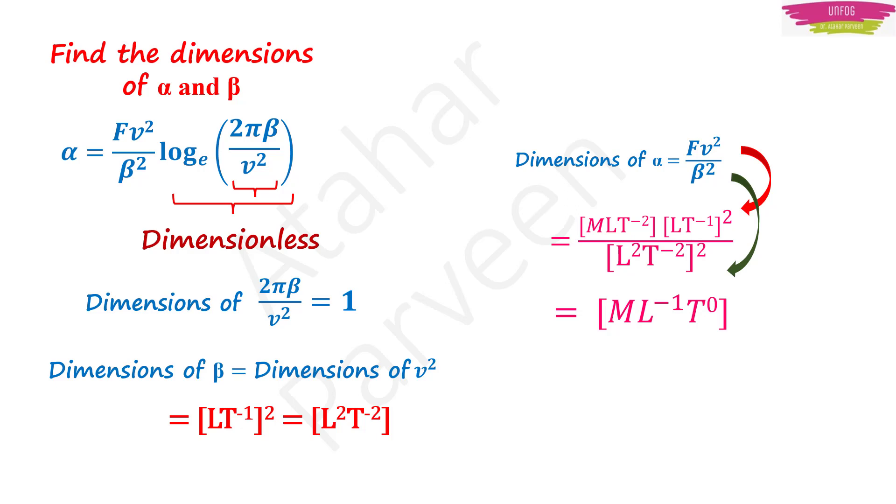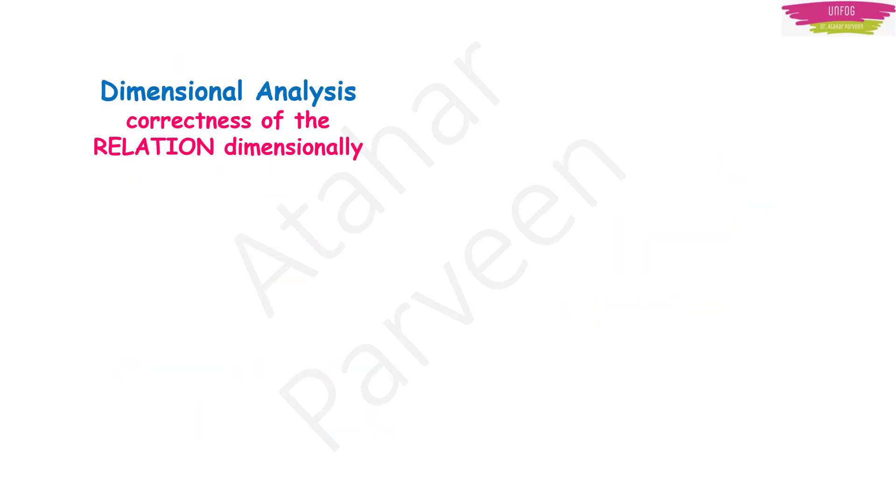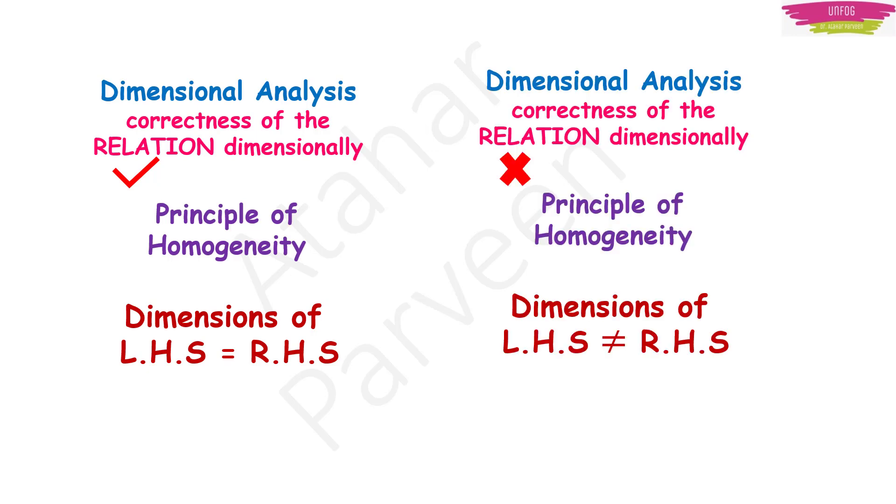In your exam, a simple equation may be asked. And also note that dimensional analysis always works to check the correctness of a relation dimensionally. Actually, it is based on the principle of homogeneity. That is, in a relation, the dimension on left hand side should be equal to the dimension on right hand side. Then only the relation is correct. If the dimension on two sides will differ, then the relation is incorrect.